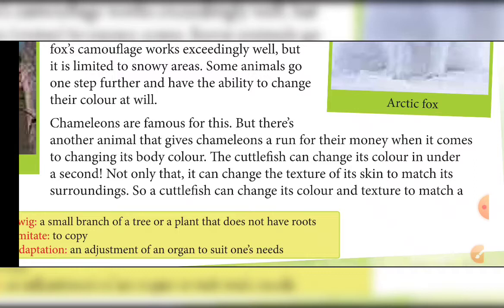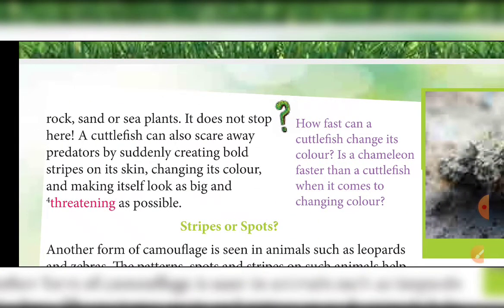The cuttlefish can change its color and texture. Whether it is sitting on an aquatic plant, sand, or a rock, its skin changes texture to match — making it look like sand, a sea plant, or a rock. It does not stop there: a cuttlefish can also scare away predators by suddenly creating bold stripes on its skin.